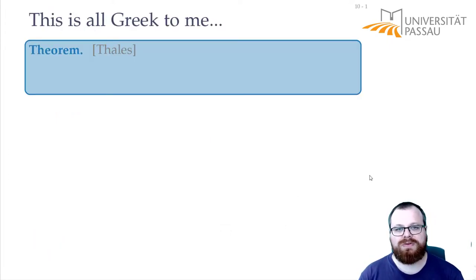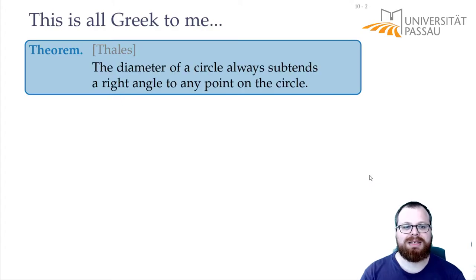Now we want to do some proofs. For that we need a very classical theorem that probably most of you know, which is Thales' theorem. The Thales' theorem says that the diameter of a circle always subtends a right angle to any point on the circle.